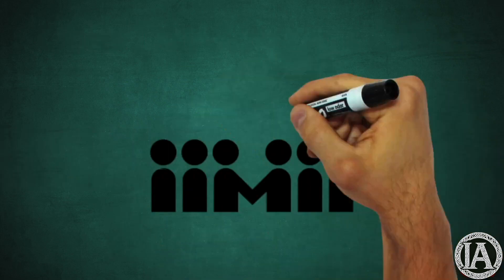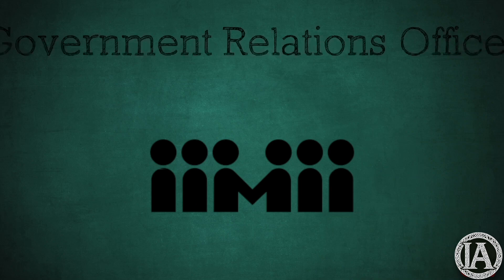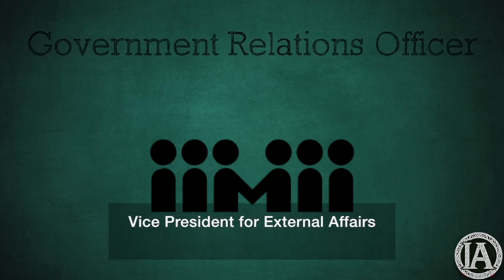The government relations officer, most commonly referred to as the vice president of external affairs, serves as a liaison between the institution and state and federal entities. This position is typically found at public institutions.